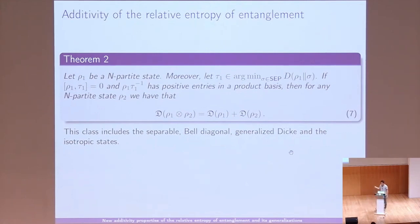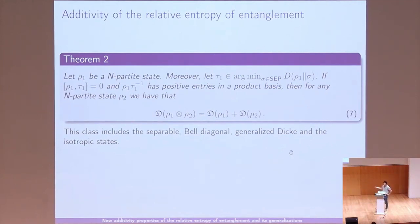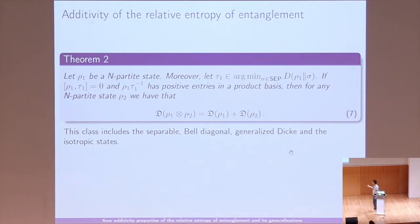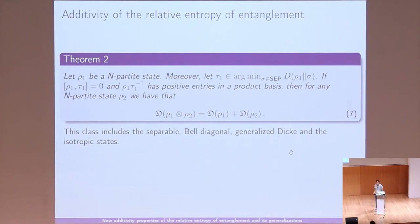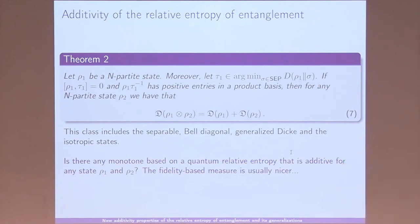The second result is of a similar flavor. Let τ₁ be the optimizer that achieves the relative entropy of entanglement of ρ₁. If ρ₁ commutes with this optimizer and has positive entries in a product basis, then for any state ρ₂ we have additivity: D(ρ₁ ⊗ ρ₂) = D(ρ₁) + D(ρ₂). The conditions look a bit abstract, but a large class of states satisfies them — separable states, Bell-diagonal states, general Dicke states, and isotropic states, which are states with particular symmetries.